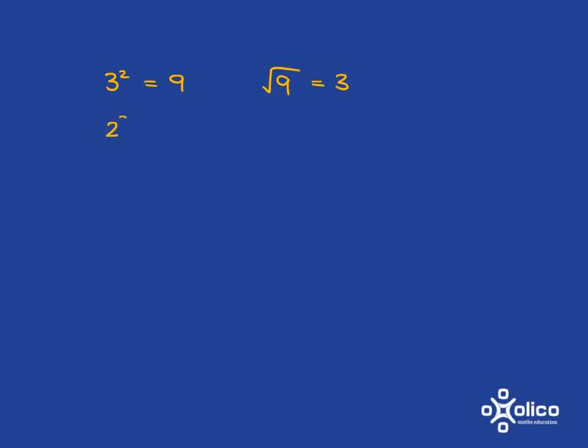Similarly, 2 cubed is 8. 2 times 2 times 2 gives you 8, and that immediately tells you that the cube root of 8 is equal to 2. Because when I'm asking for the cube root of 8, I'm asking what number multiplied together 3 times gives you 8.